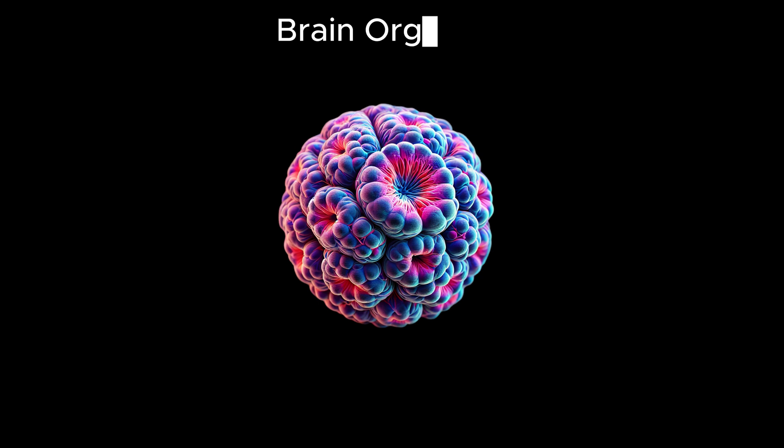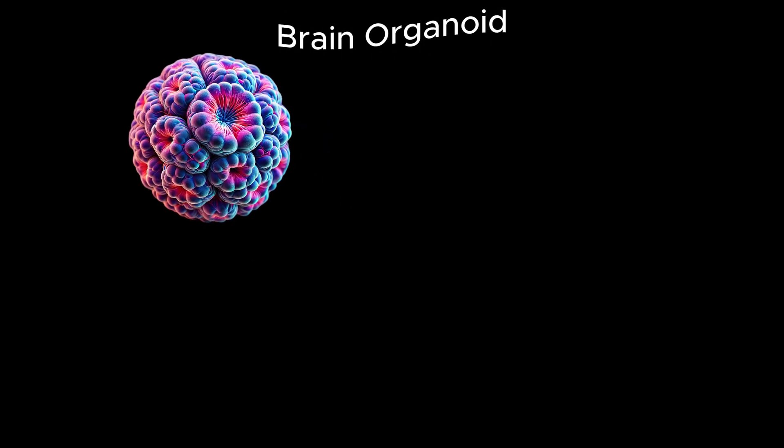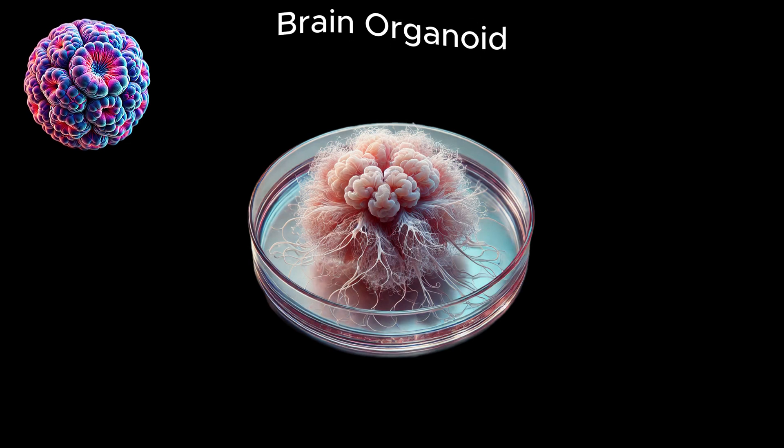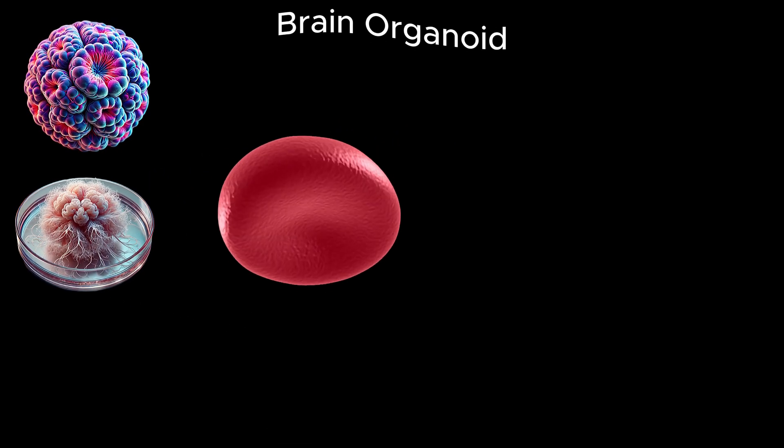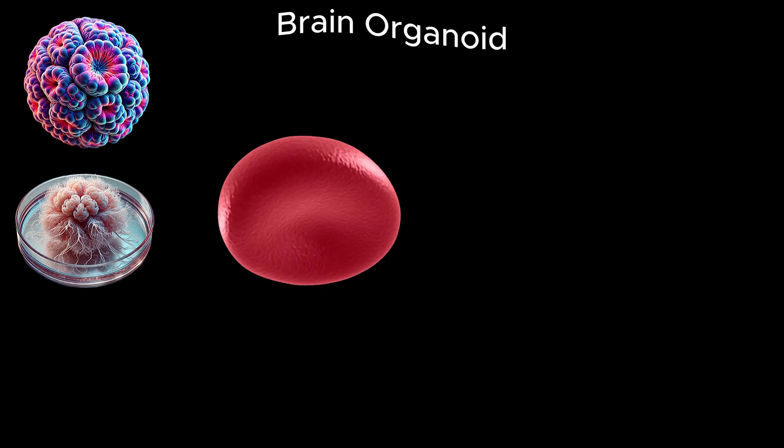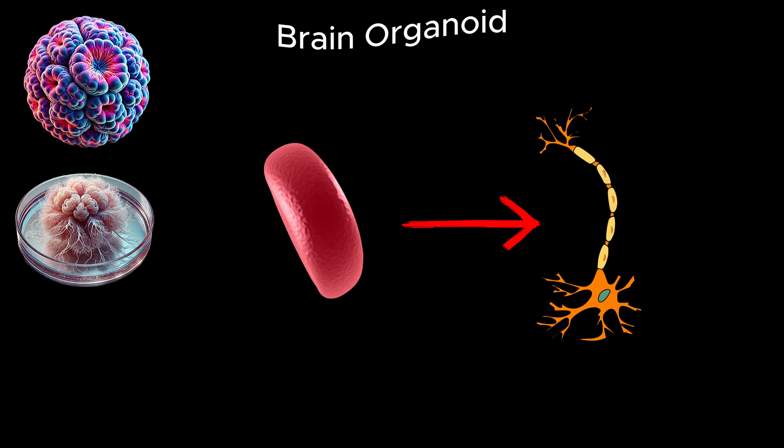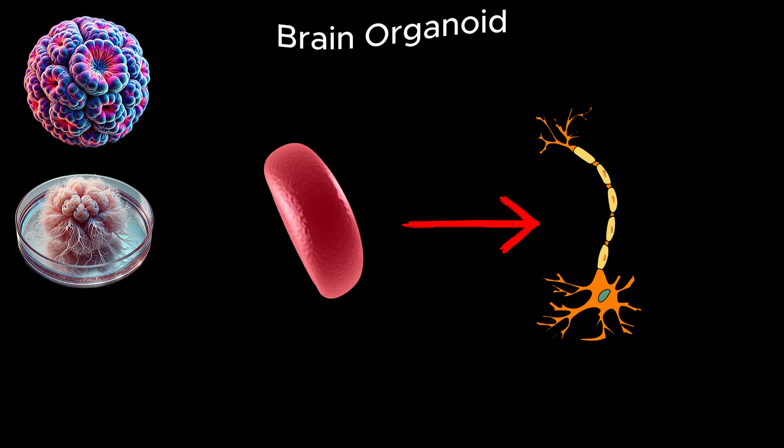Before we see how brain organoids solve the bottleneck, let's first understand what they are. A brain organoid is a tiny lab-grown structure that mimics certain aspects of a developing human brain. These organoids are created from human stem cells, which are special cells capable of transforming into different types of cells in the body, including neurons, the building blocks of the brain.